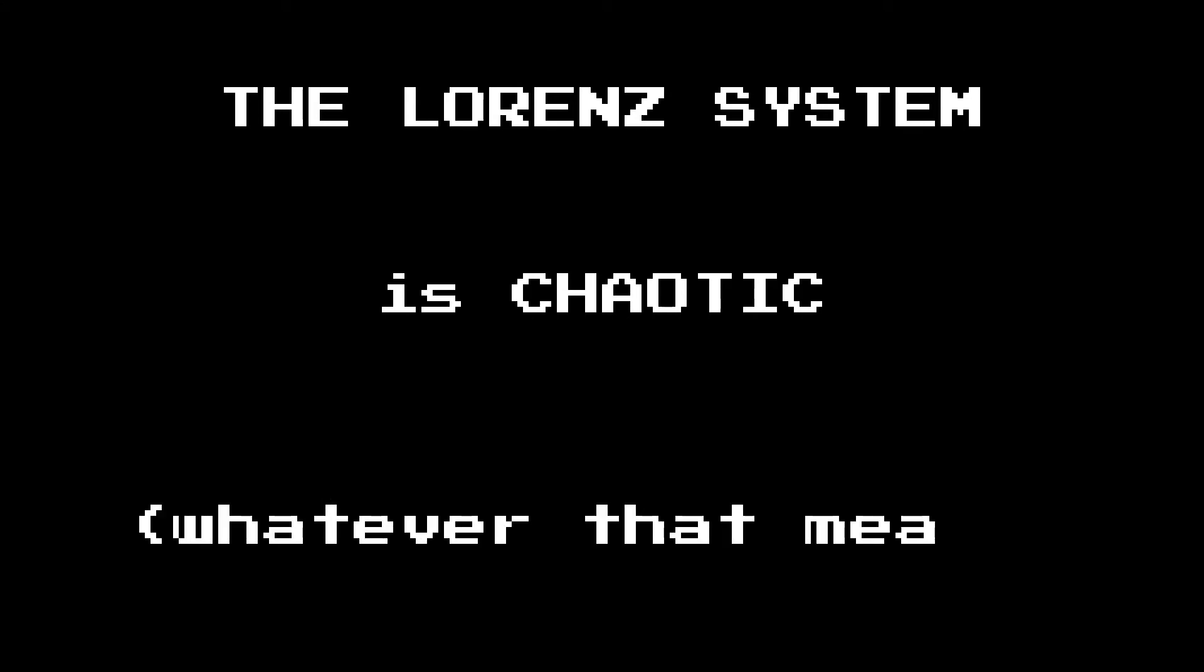So what have we seen? We have observed that the Lorenz system is chaotic. But what do we really mean when we say that? What is the definition of chaos?